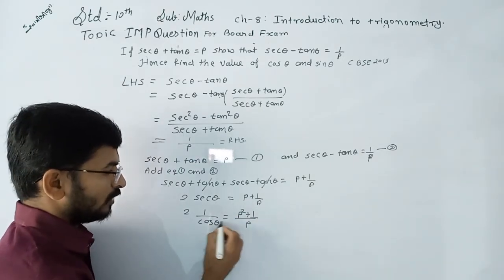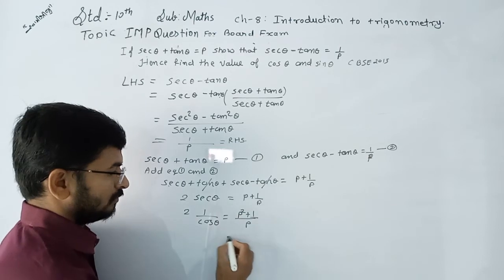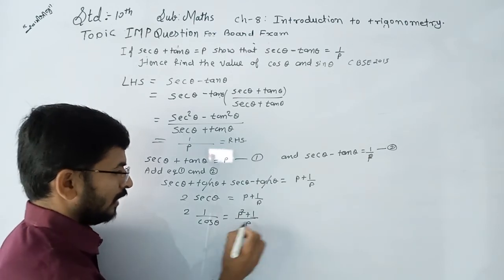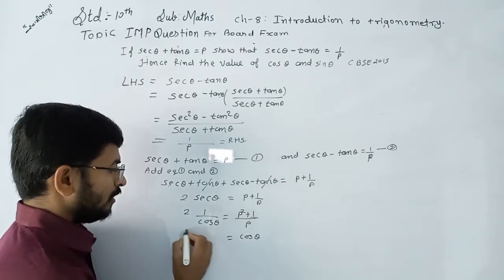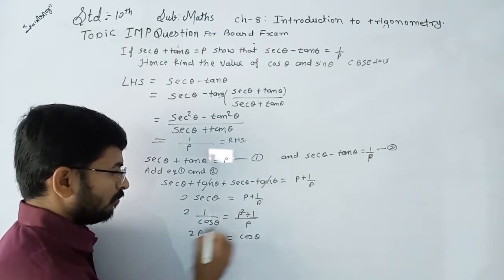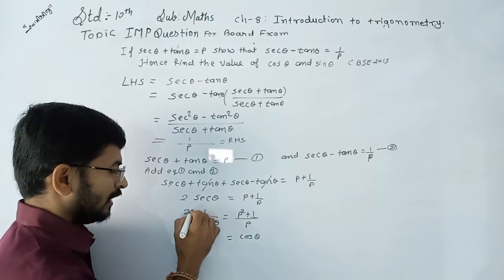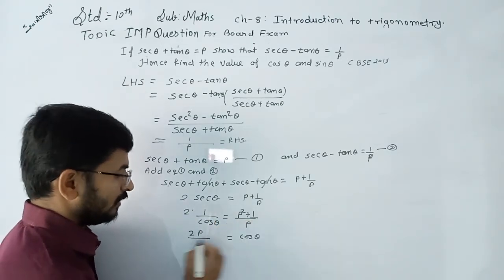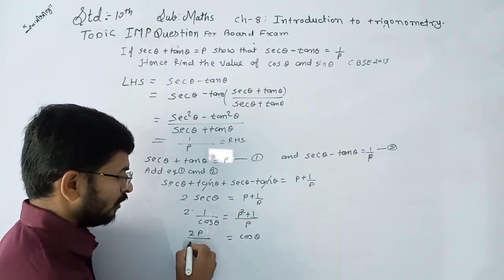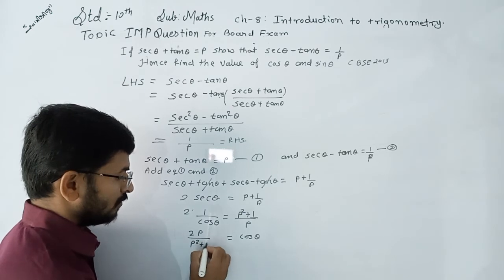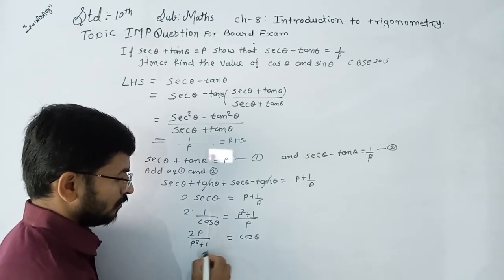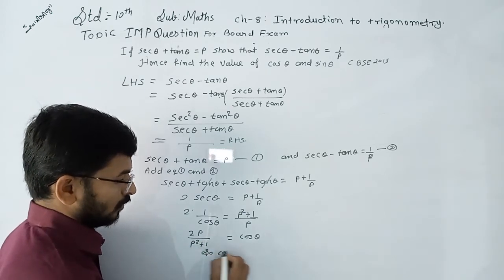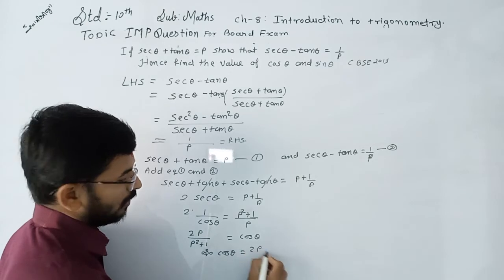cos θ goes to the right side. Rearranging, 2 into p and (p² + 1) goes to the denominator, so cos θ is equal to 2p upon (p² + 1).